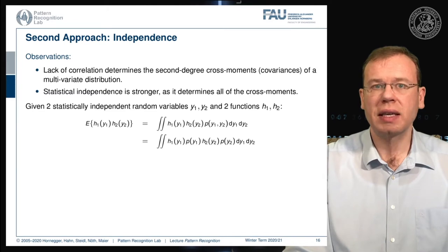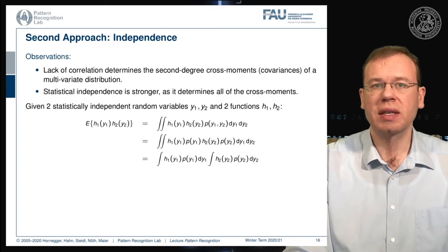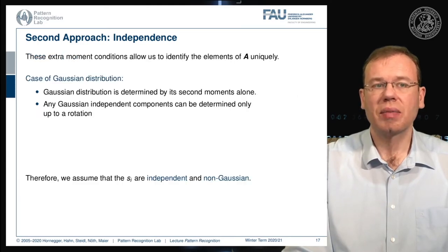We assume independence, which means the joint probability can be expressed as the product of the individual probabilities. This allows us to split the joint probability and the integral into two separate integrals, each focusing on one variable. We then get the product of the expected values, so the extra moment conditions allow us to identify the elements of A uniquely.